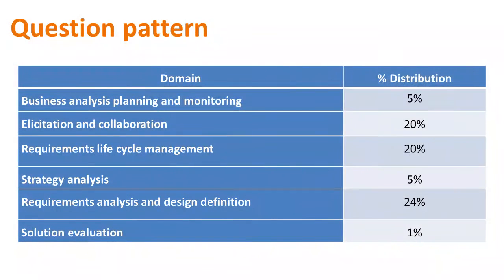Continuing the ECBA question pattern: Business Analysis Planning and Monitoring gets 5%, Elicitation and Collaboration gets 20%, Requirements Life Cycle Management gets 20%, Strategy Analysis gets 5%, Requirements Analysis and Design Definition gets 24%, and Solution Evaluation gets 1%. Please note the higher emphasis on three knowledge areas: Elicitation and Collaboration, Requirements Life Cycle Management, and Requirements Analysis and Design Definition.